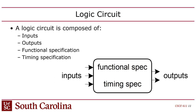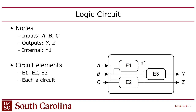A logic circuit is defined as having inputs, outputs, a functional specification, and a timing specification. This is important because a logic circuit maps into a module in System Verilog. A module is similar to a class in Java. When you define a module, you define your inputs and outputs first — that's right at the top. Inside the module you can have internal signals not visible outside, like private variables in Java. Modules basically contain instantiations of other modules, just like objects inside a class.